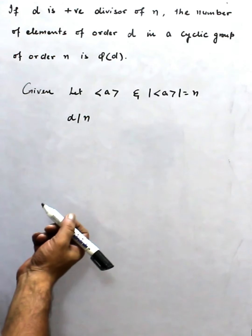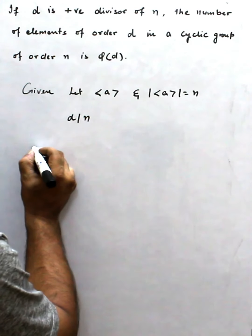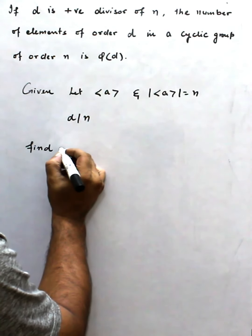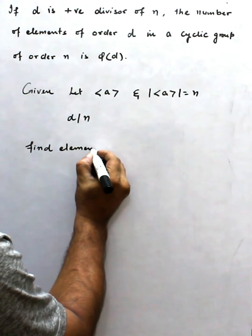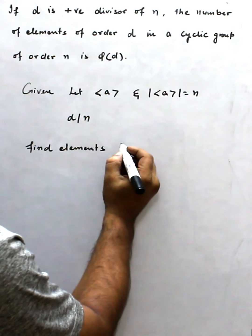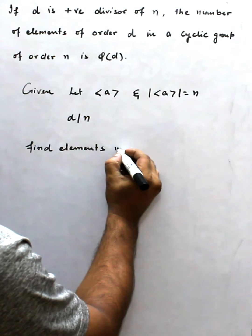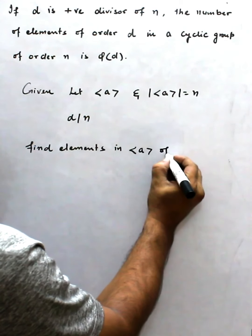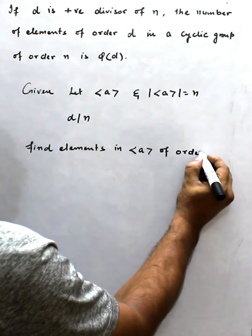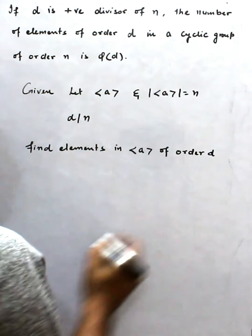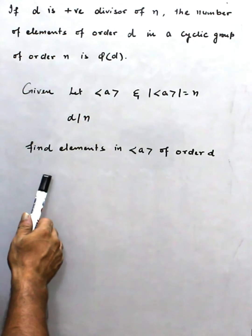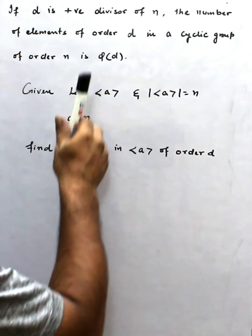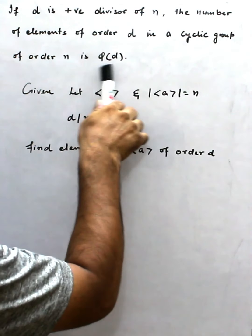Now what we have to do, what we have to find. We have to find elements in cyclic group <a> of order d, and we have to show that these elements equal φ(d).